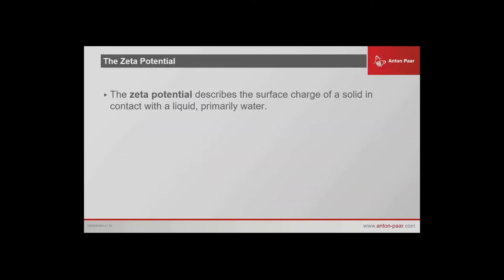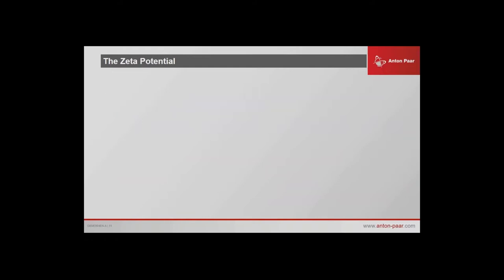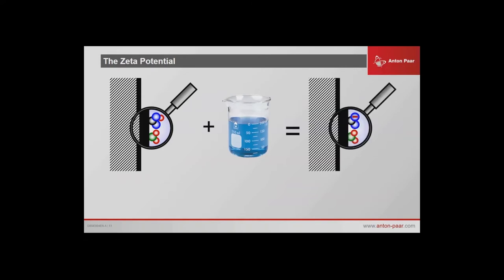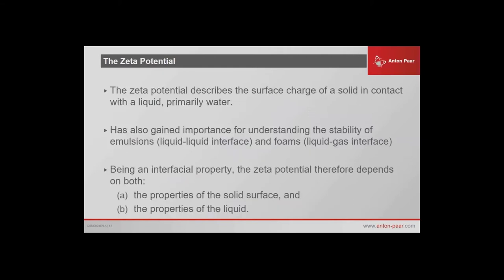Zeta potential — what is it? It describes the surface charge of a solid when it comes into contact with a liquid, primarily water. There are applications when you can put it in contact with a non-polar solvent, but that's really complicated and not for today's scope. Surface with some molecules on the surface, you add water, you get a net charge, and then you try to measure it. That would be the Zeta potential.